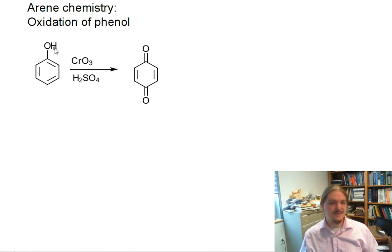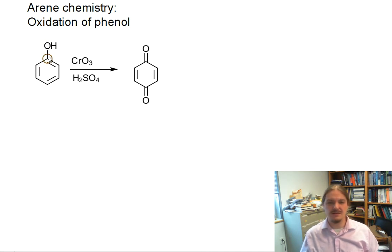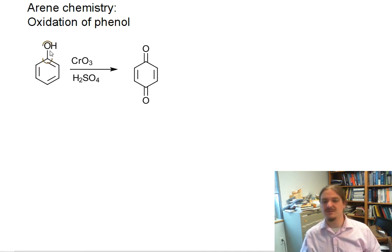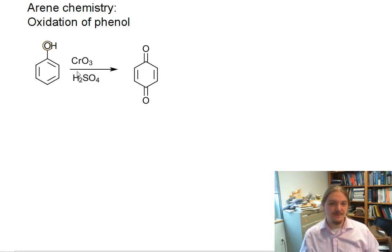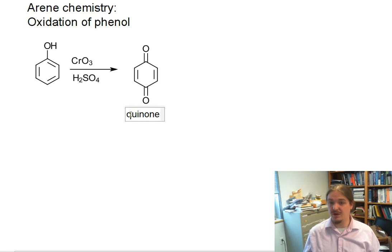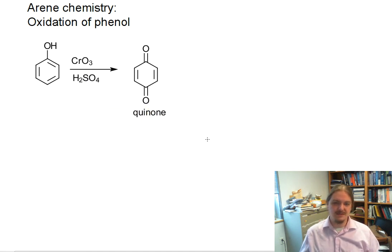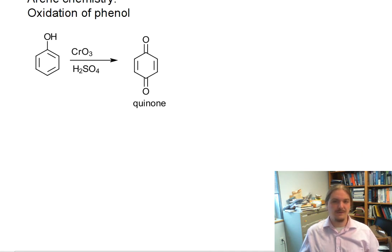It's not just possible to oxidize this straight up to a ketone. There's no hydrogen to remove here, and you can't have this extra double bond — it'd be five bonds. So phenols actually get oxidized to something called a quinone, and specifically this is para-benzoquinone, or paraquinone.